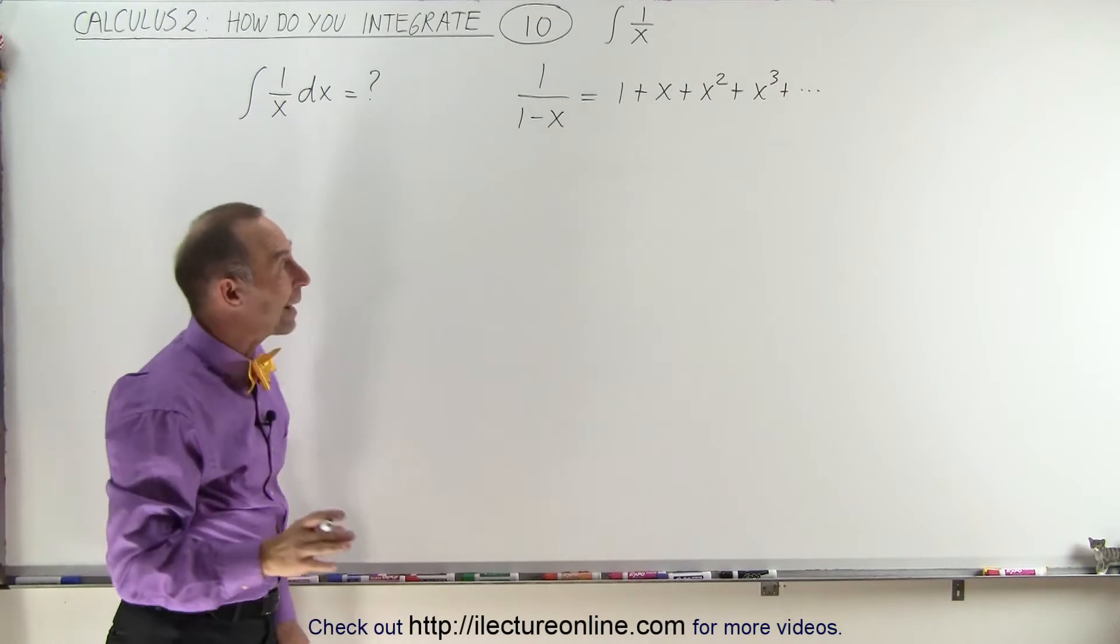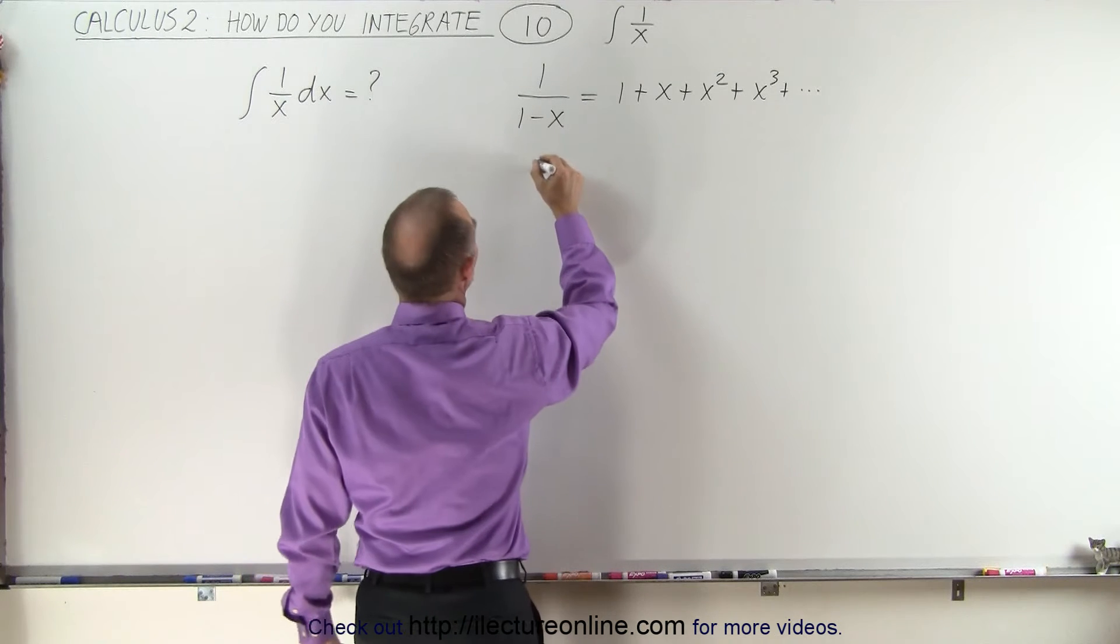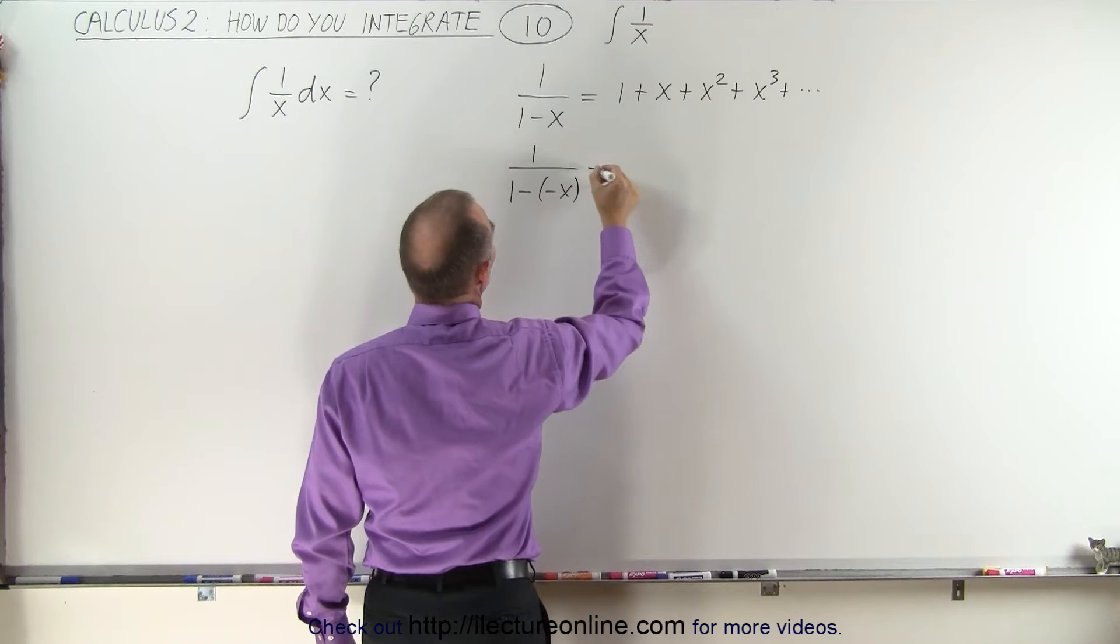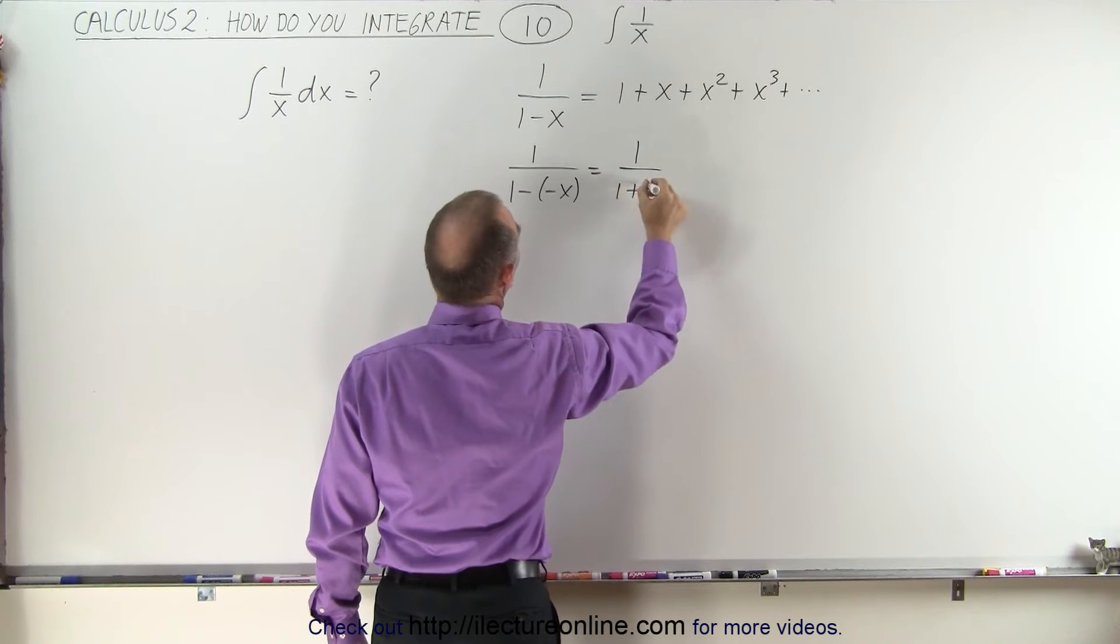Now, if we replace the x by a negative x, then this becomes 1 over 1 minus negative x, which is really 1 over 1 plus x.